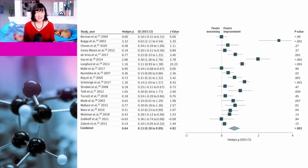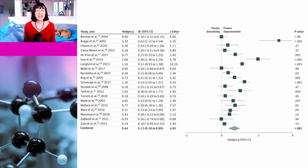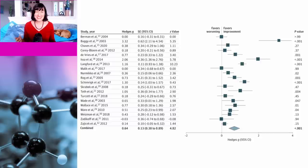If the confidence interval is also to the right of the vertical line, it means that the reduction was statistically significant. The confidence interval is the horizontal line that you can see on either side of the box. The diamond at the bottom is the combined effect of all the trials, and as you can see it is to the right of the vertical line, which means that pain was rated as being significantly less intense after treatment with a placebo.